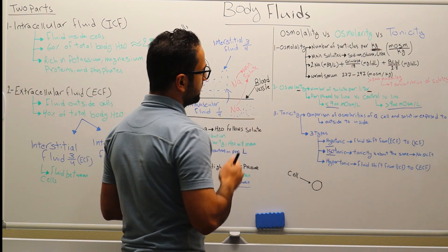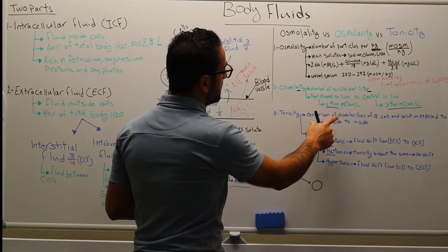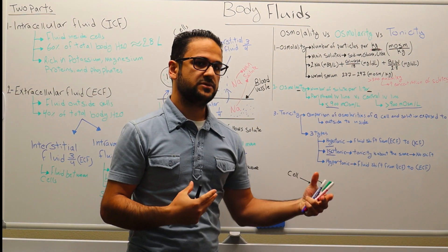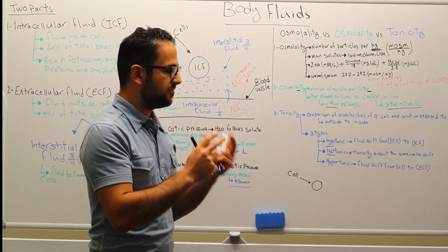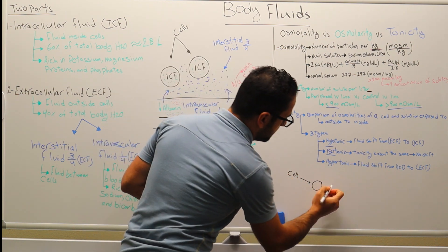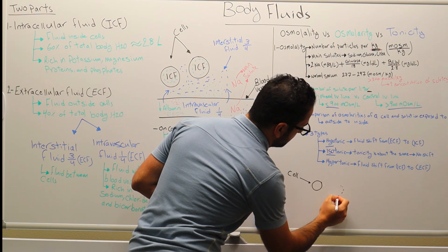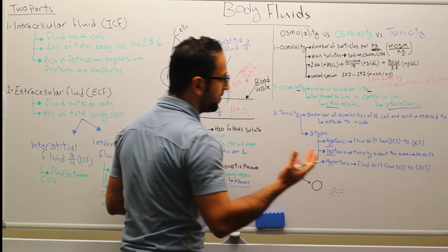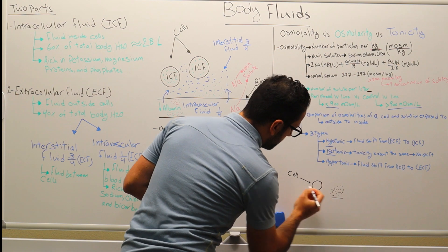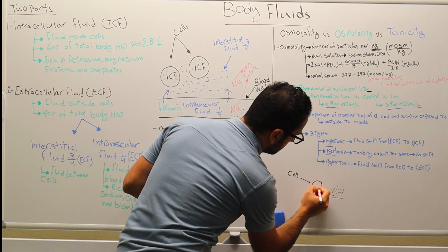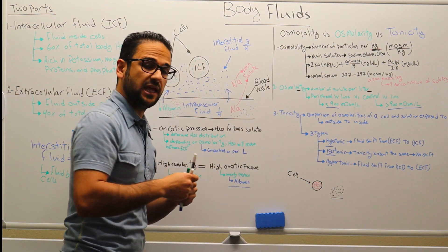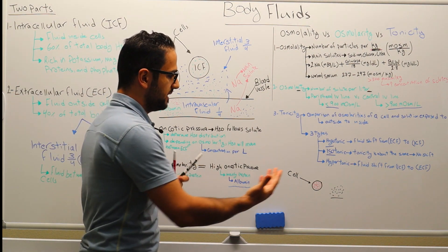Now moving on to tonicity. Tonicity is the comparison of osmolarities — we're comparing the osmolarity of a cell to the solution that it is exposed to. So we have a cell, and we're comparing this cell to its outside environment, mainly comparing the concentration of solutes outside to the concentration inside. Depending on which is higher, equal, or lower, water or fluid will be moving in and out of the cell.